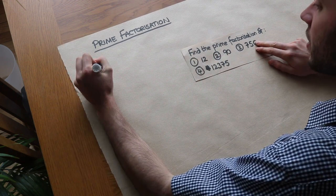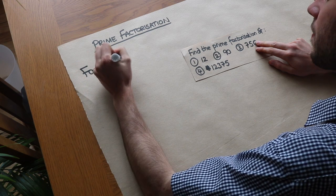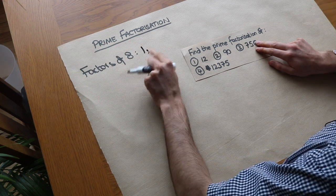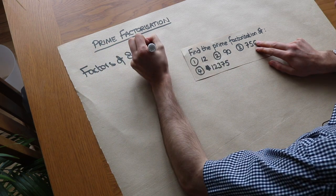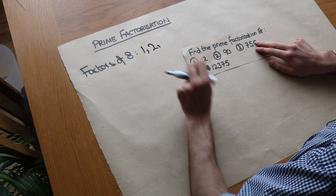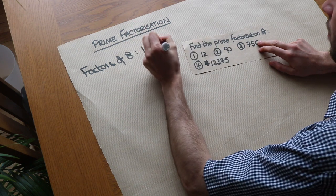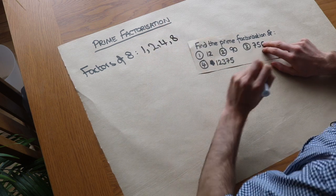So if we said find the factors of 8, then we know that 1's a factor because 1 goes into 8 a whole number of times. 2's a factor of 8 because it goes into 8 a whole number of times, it goes in 4 times. 4 is a factor and 8 is a factor.